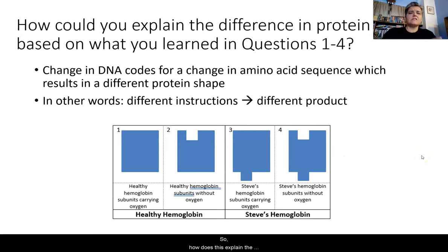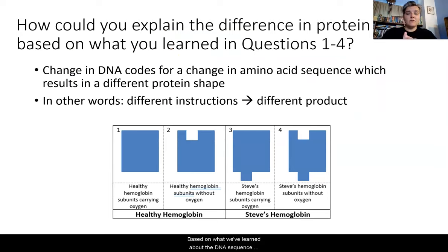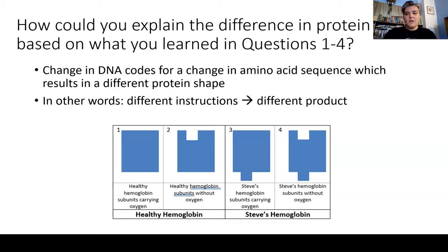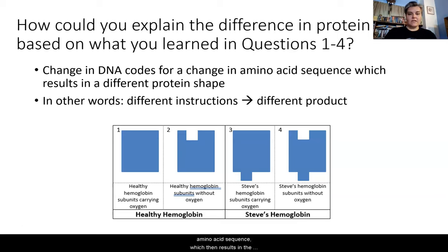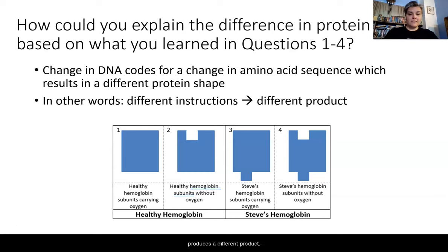Comparing shapes one and three: the healthy hemoglobin carries oxygen normally, but with Steve's hemoglobin, there's an extension that sticks out of the bottom that is not present in the healthy version. Ultimately, the change in the code for the amino acid changes the amino acid sequence, which results in a different protein shape. In other words, different sets of instructions produce a different product.